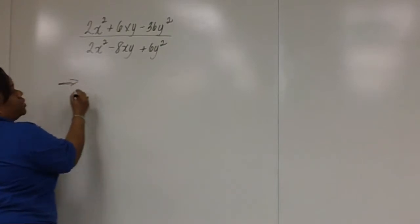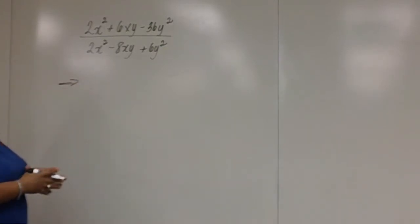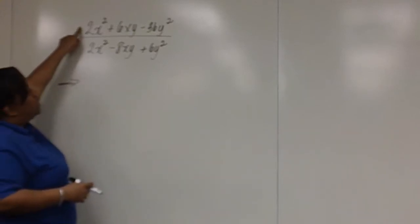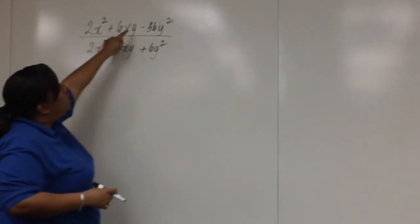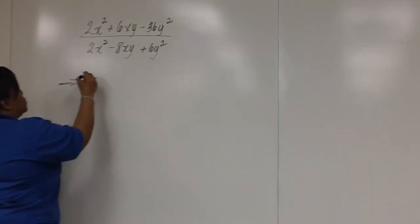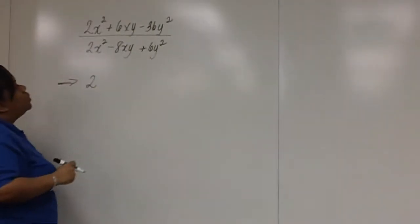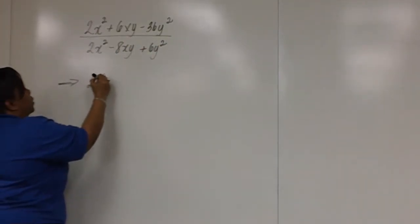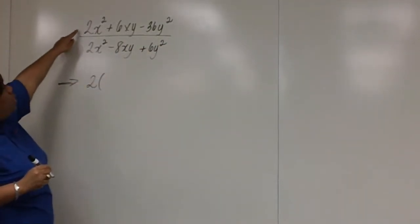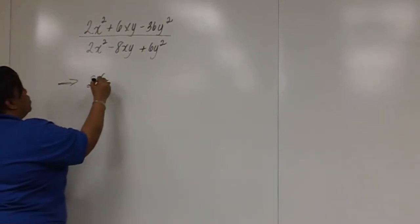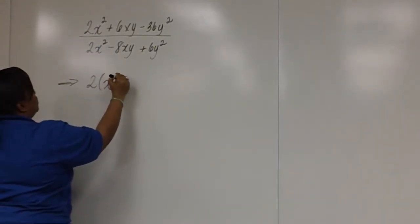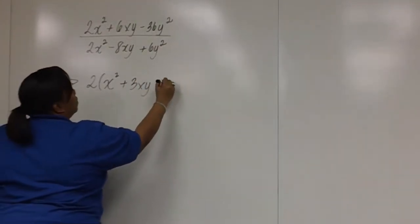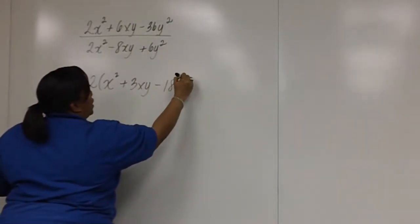Keep in mind that the first step in factoring is to check for a GCF. So in the numerator, the GCF between 2, 6, and 36 is 2. Notice that neither of the variables is part of the GCF. So after factoring out a 2 from the numerator, we're left with x squared plus 3xy minus 18y squared.